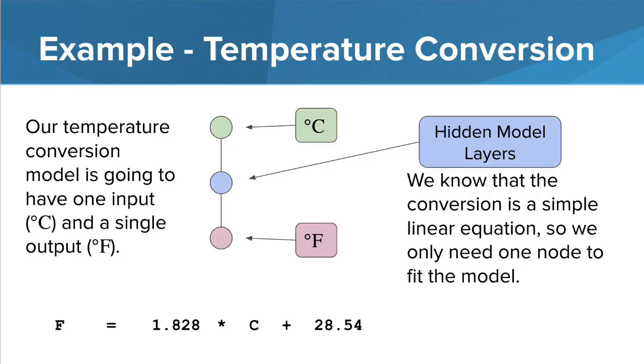After running some data through the calculation, you may get something like this. Notice that the equation is not exactly 1.8 times degrees Celsius plus 32. The weights and biases start out with essentially random values. Each time the model runs through the data, the error is calculated and new values are created. As the model makes more passes through the data, the model error will typically get smaller and these values will get closer to the 1.8 and 32 that we know.